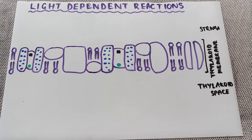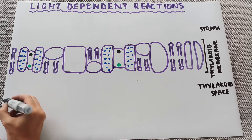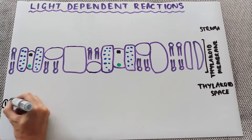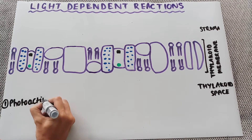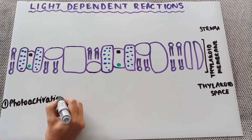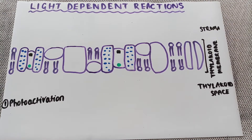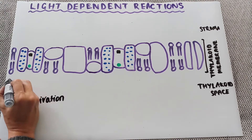For this video I'm only going to be writing some key terms on here, but I will be talking through each of the different steps, just in the interest of space on my piece of paper. With light dependent reactions, the first step is what is called photo activation — so number one is photo activation.